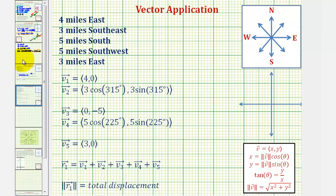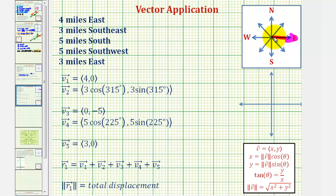I've already set some of this up. Notice how if someone walks four miles east, or in this direction four miles, the x component would be four and the y component would be zero.